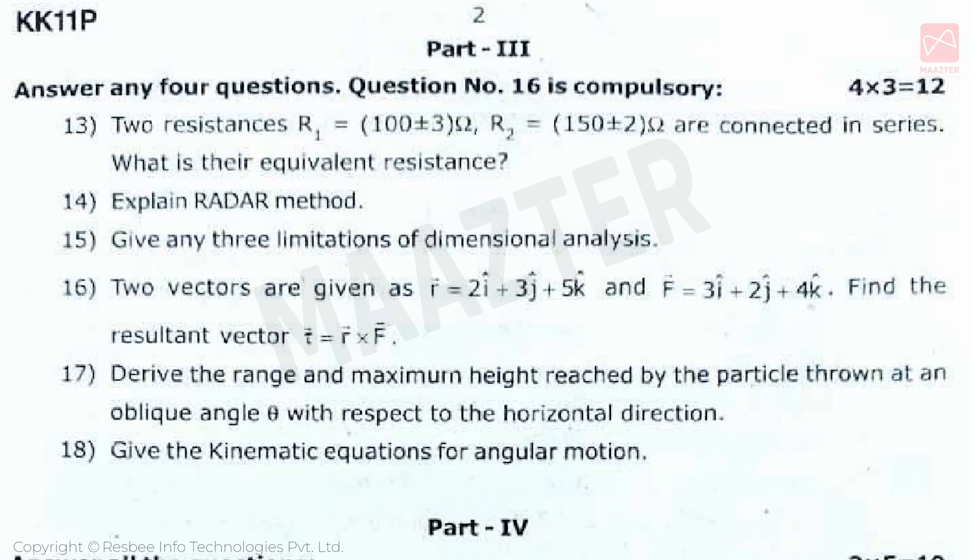This is 3 mark question section. Six questions are given, from which you must attend 4 questions, and question 16 is compulsory. First question: Two resistances R₁ = 100 ± 3 ohm, R₂ = 150 ± 2 ohm are connected in series. What is their equivalent resistance? For resistances connected in series, the formula is R = R₁ + R₂. Substitute the R₁ and R₂ values in the formula to get the answer.